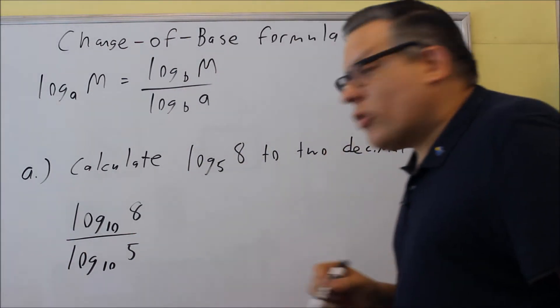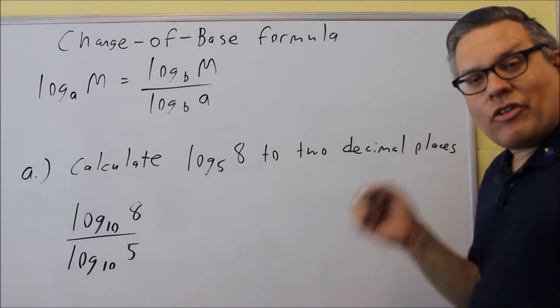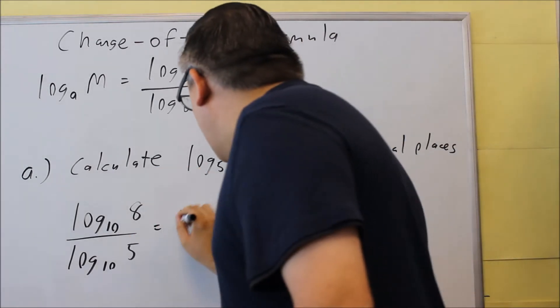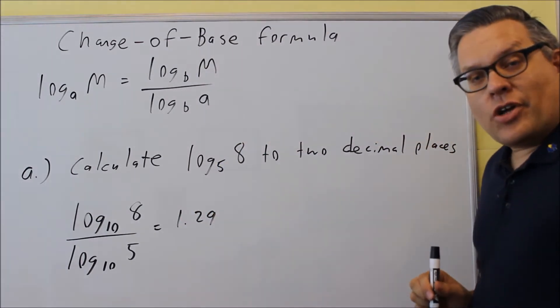Or I don't even need to show the 10 on there. I could just put simply LOG 8 and LOG 5. Now if I put that into my calculator, what I'm going to get is 1.29, that's rounded to two decimal places.